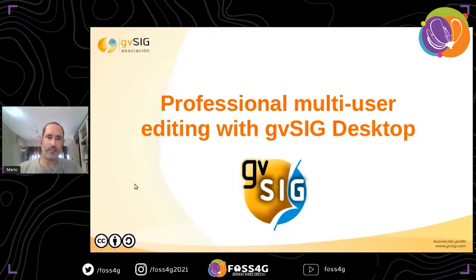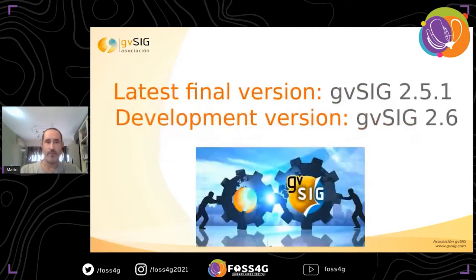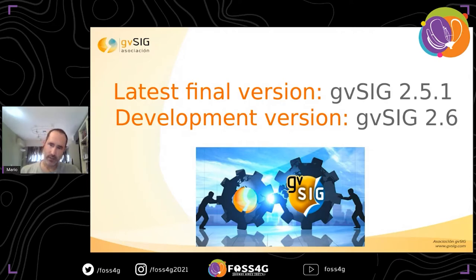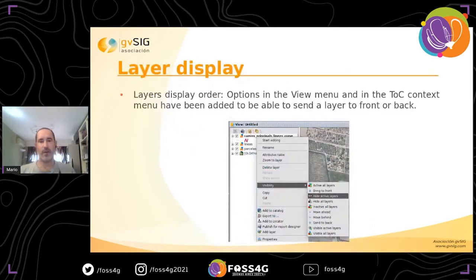I'm going to start speaking about professional multi-user editing with GBSIC desktop. The latest final version of GBSIC is 2.5.1, which you can download from the GBSIC website. We are also working on the new version, GBSIC 2.6, and you can download the development builds from the GBSIC website too.